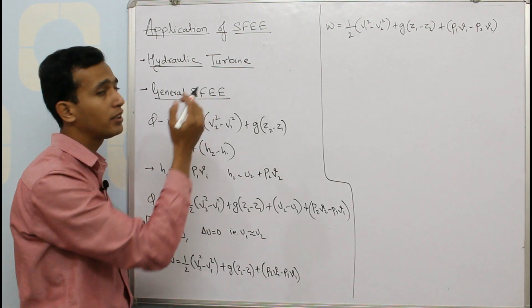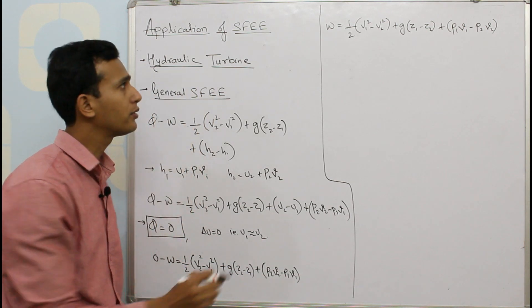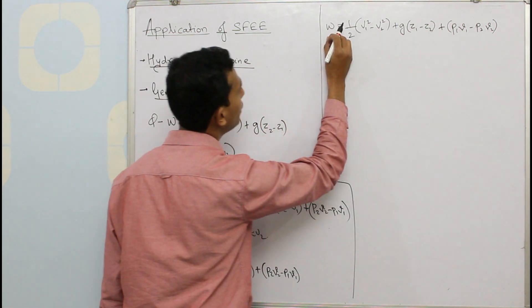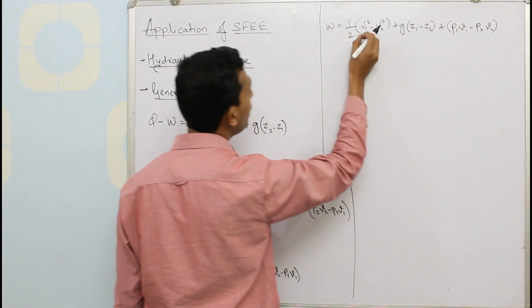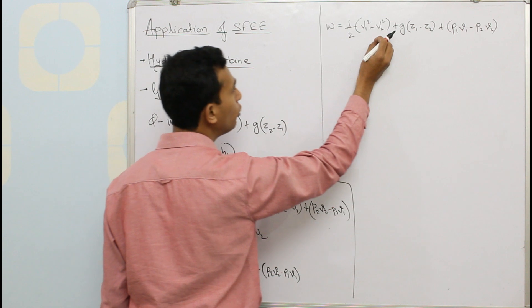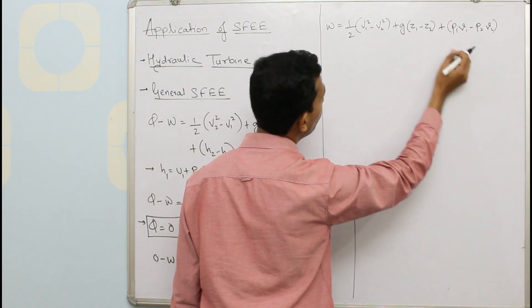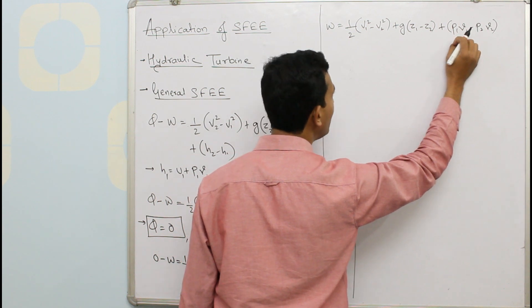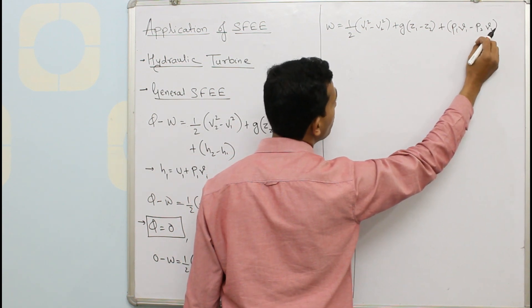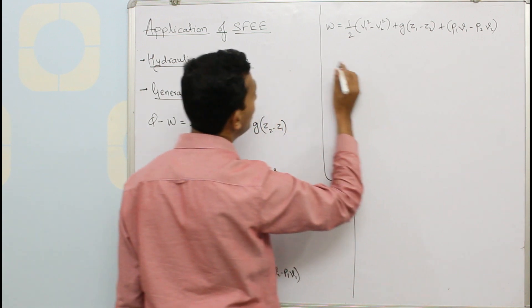Now this W is positive because we all know hydraulic turbine is a work producing device. So if this term is positive means this side should also be positive, means V1 is greater than V2, Z1 is greater than Z2, and P1V1 the product of pressure and specific volume at inlet should be greater than product of pressure and specific volume at output.